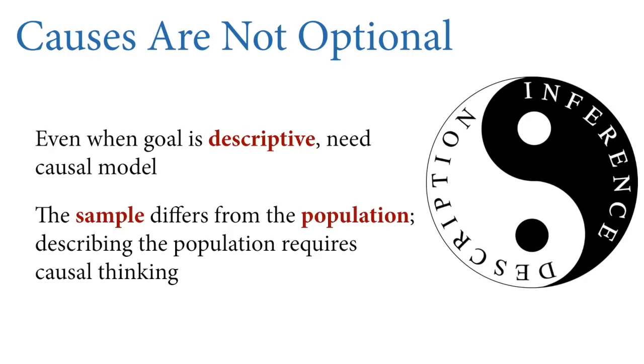I want to emphasize this issue about description here. I'm an anthropologist, and a lot of what anthropologists do is describe things. Description is fundamental to scholarship. But to do description right, you need causal information. You need causal information about how the sample differs from the population. I'll say that again: to do description right, you need causal information about how the sample differs from the population. When you're studying humans, the sample always differs from the population, sometimes in very systematic ways. To adjust for those sampling biases, you need to understand what caused them.